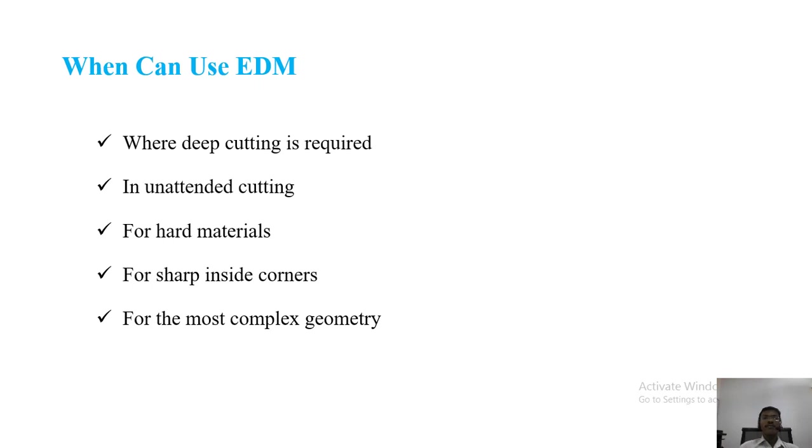When can we use EDM? Where deep cutting is required in unattended cutting. Unattended cutting means suppose we have to make a square hole for a 50mm thickness plate. Generally we can make a drill for unattended cutting. The remaining area we can cut by using this wire cutting. Hard materials can be machined by using this EDM. For sharp inside corners, for most complex geometry. In these situations we can go for electrical discharge machining.